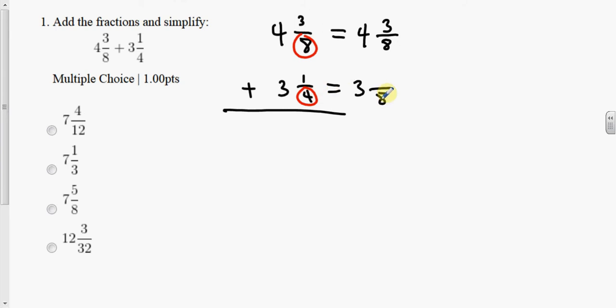4 goes into 8 two times. 8 divided by 4 is 2. 2 times 1 is 2. And so now we add we get 4 plus 3 is 7. 3 plus 2 is 5 all over the common denominator which is 8.